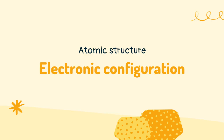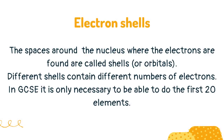The spaces around the nucleus where the electrons are found are called shells, or orbitals. Different shells contain different numbers of electrons. In GCSE it is only necessary to be able to do the first 20 elements.